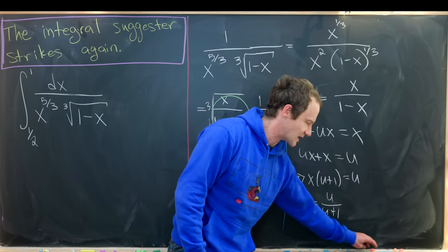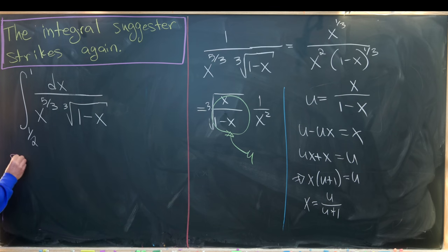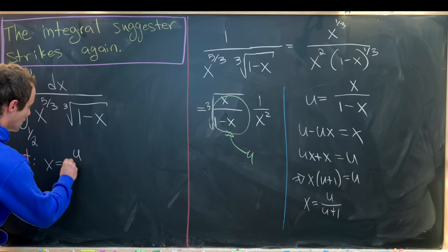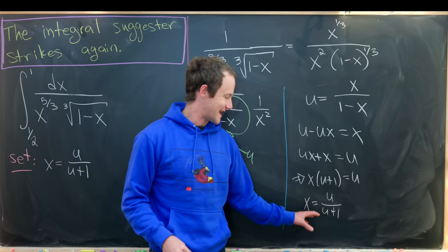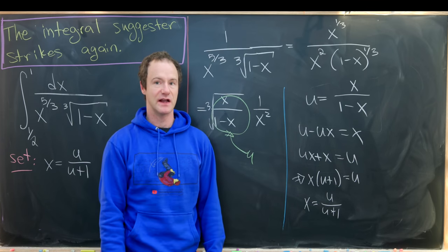which tells us that x is equal to u over u plus 1. So maybe that's a little bit of a cleaner way of writing our substitution. So just to reiterate what we're doing, let's set x equal to u over u plus 1. But if we set x equal to u over u plus 1, then we need a dx component as well.